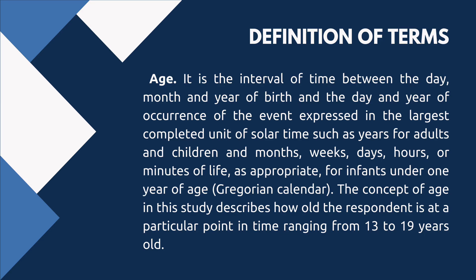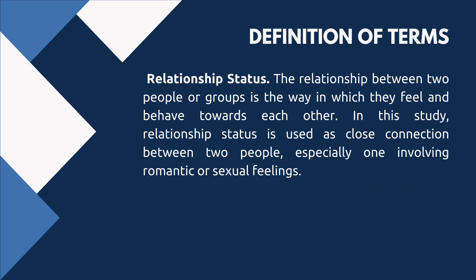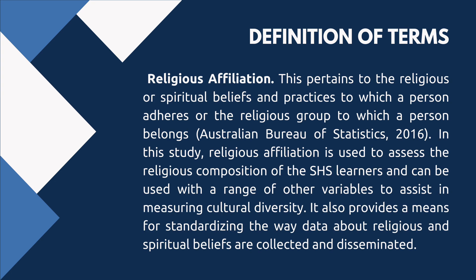The concept of age in this study describes how old the respondent is at a particular point in time, ranging from 13 to 19 years old. Educational attainment refers to the highest level of education that a person has successfully completed, typically validated through the assessment of acquired knowledge, skills, and competencies (UNESCO 2012). In this study, educational attainment is defined as the level of education achieved by the parents or guardian of the senior high school learners. Relationship status: the way in which two people or groups feel and behave towards each other.